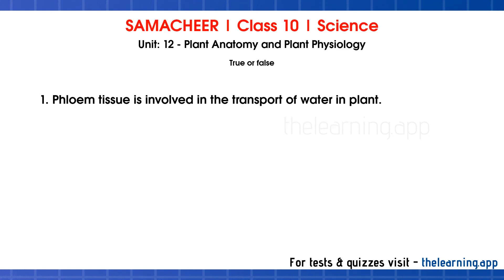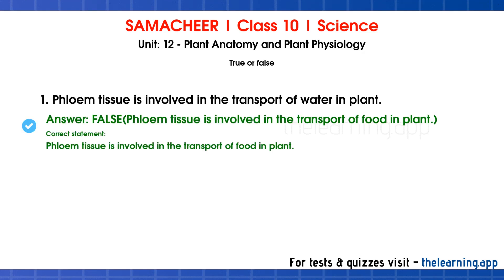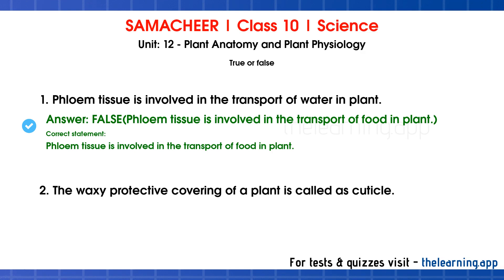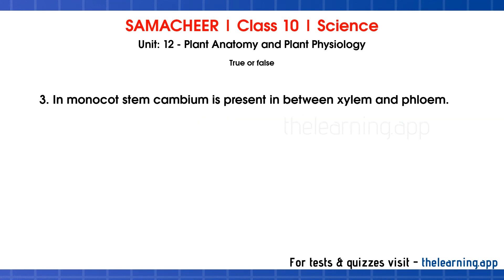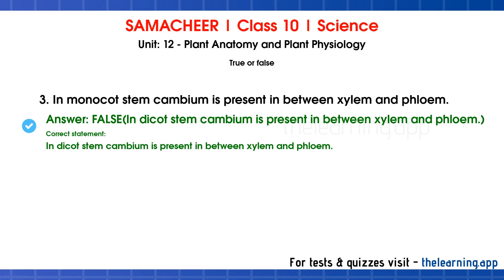True or False. First question: Phloem tissue is involved in the transport of water in plants — this is false. Phloem is used for transport of food; water transport is done by xylem tissue. Second question: The waxy protective covering of a plant is called a cuticle — this is true. Third question: In monocot stem, cambium is present between xylem and phloem — this is false. The correct statement is: in dicot stem, cambium is present between xylem and phloem.